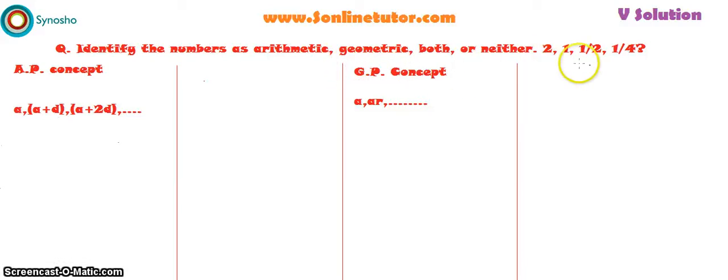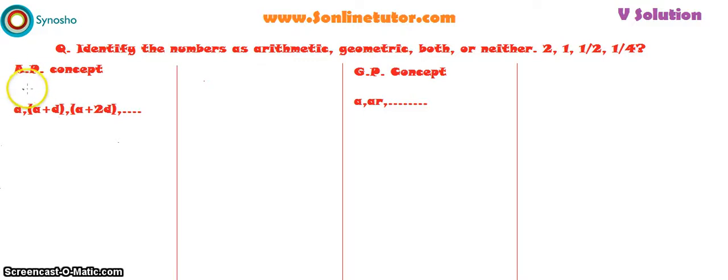If you want to find out whether a given series is arithmetic or geometric, first you have to understand what is the meaning of arithmetic progression and what is the meaning of geometric progression.